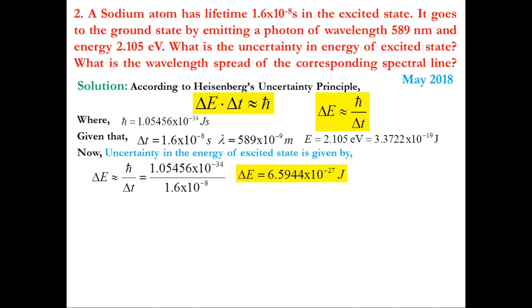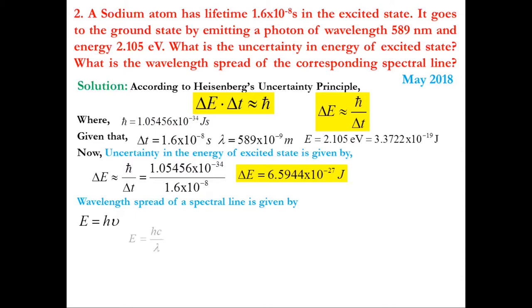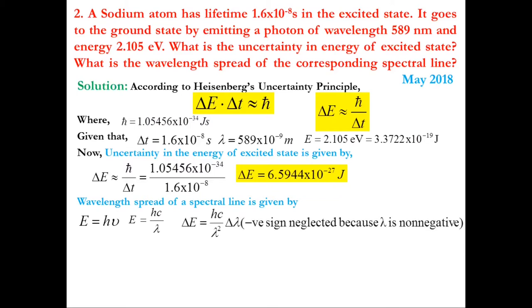For the wavelength spread of the spectral line, we use Planck's law E = hν, where ν = c/λ. Differentiating, we get ΔE = (hc/λ²) · Δλ, where the negative sign is neglected due to the non-negative character of wavelength. Rearranging, Δλ = λ²·ΔE / (hc).